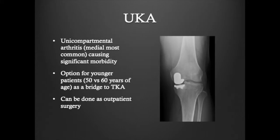A partial knee replacement or unicompartmental arthroplasty is used when arthritis is isolated to one aspect of the joint. This is a less common procedure, occurring in approximately 5% of cases of arthritis. It is a very safe and effective surgery and can be done on an outpatient basis.